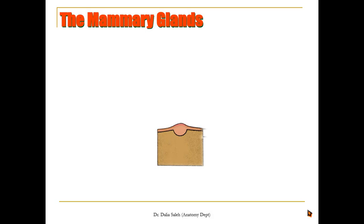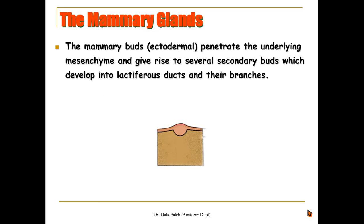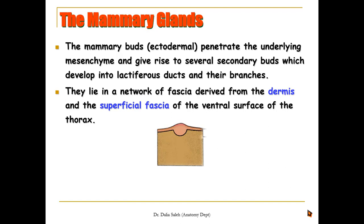The mammary glands are ectodermal in origin because they arise from the cells of the epidermis, but they lie deep and embedded in the tissue of the dermis. The first appearance of the mammary glands is by the thickening of the ectodermal cells of the epidermis, forming what is called the mammary buds. These penetrate the underlying mesenchymal cells of the dermis and give rise to several secondary buds, which develop into lactiferous ducts and their branches. At first they are not canalized, but later they become canalized during puberty.